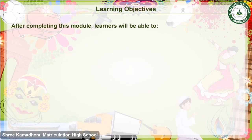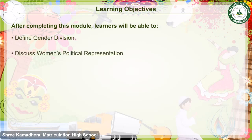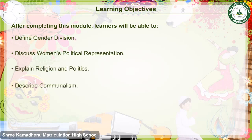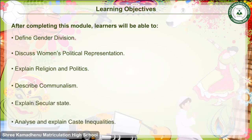Learning Objectives: After completing this module, learners will be able to define gender division, discuss women's political representation, explain religion and politics, describe communalism, explain secular state, and analyze and explain caste inequalities.